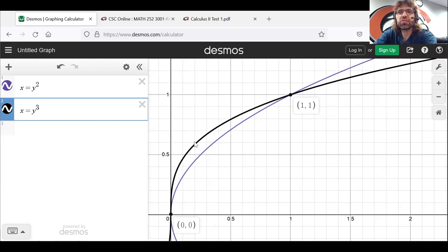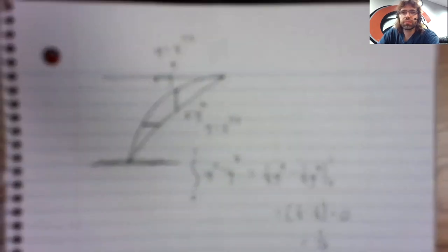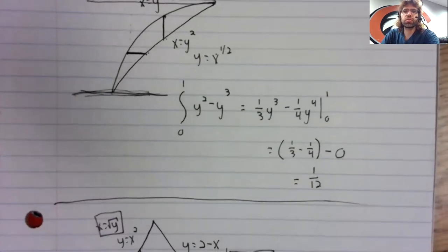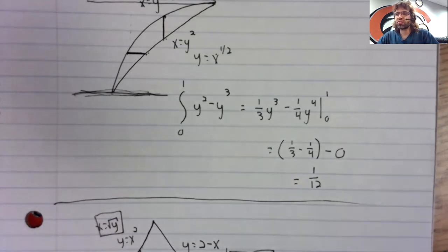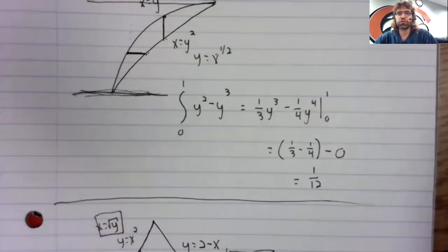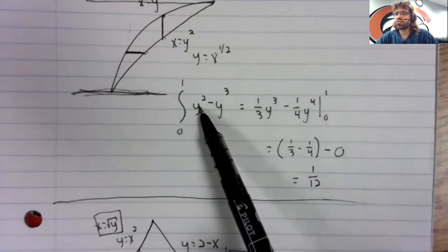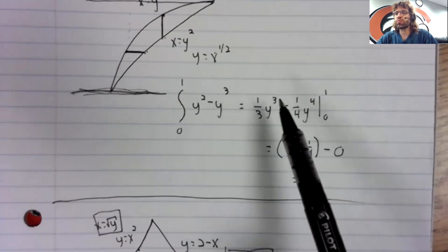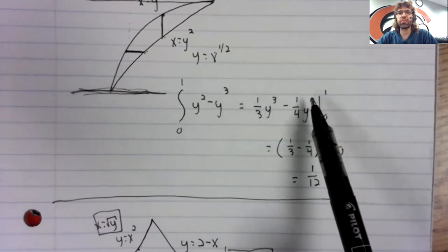I'm trying to test your calculus, not your ability to set equations equal to each other. So we integrate from zero to one. There's nothing really special about this integration. Y squared to one third, y cubed to one fourth, y to the fourth.